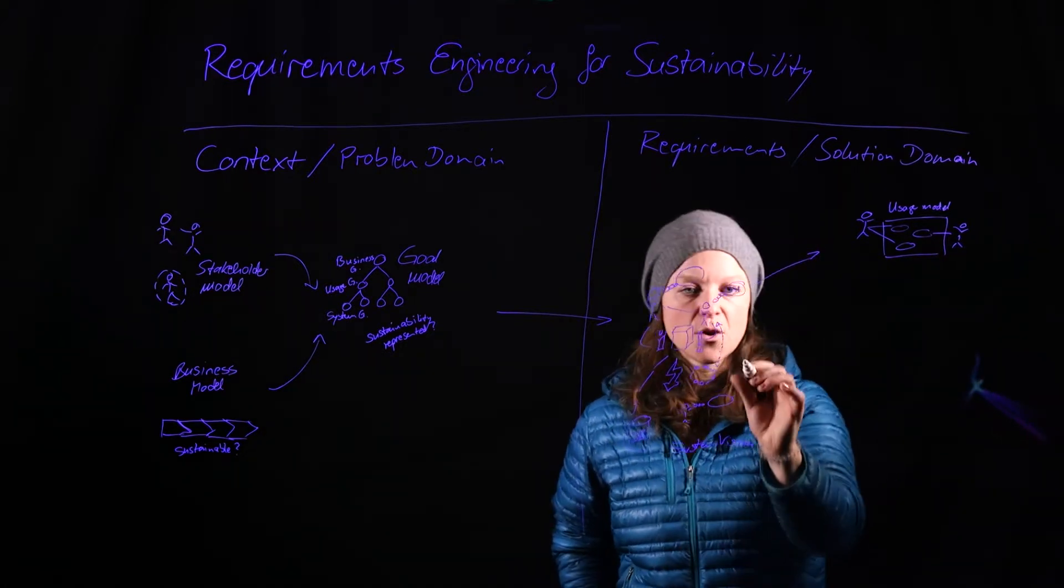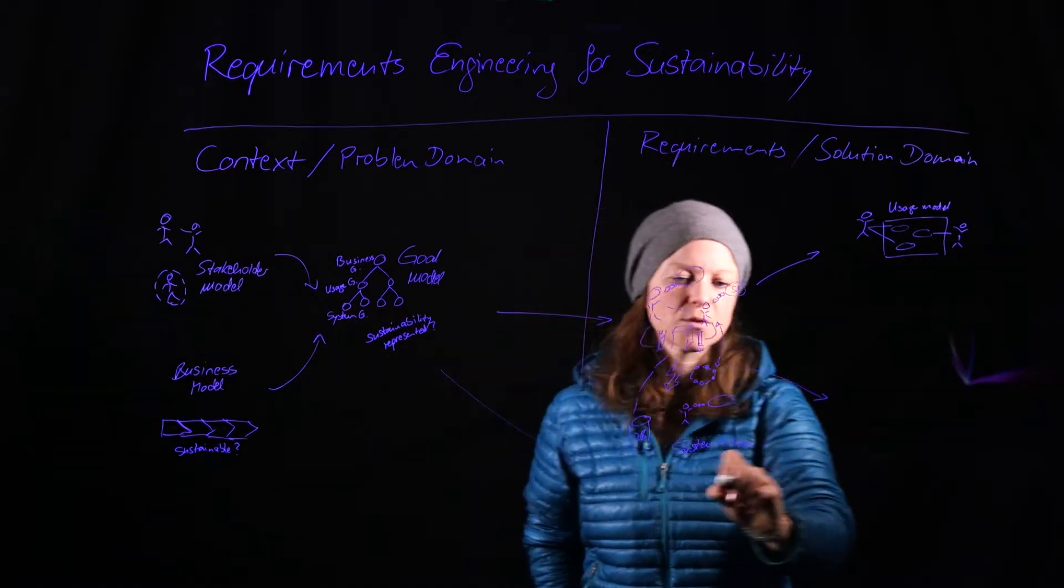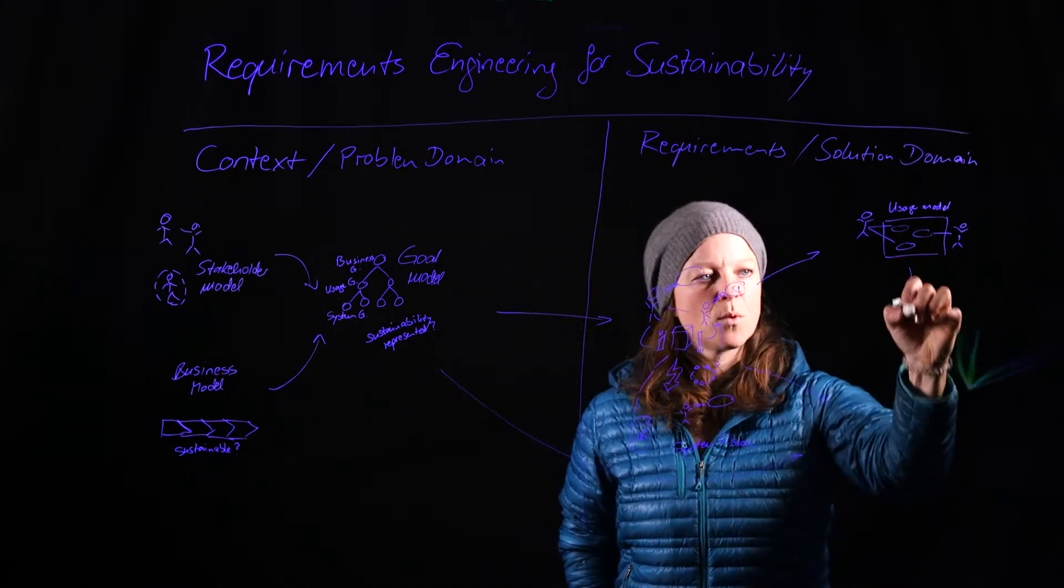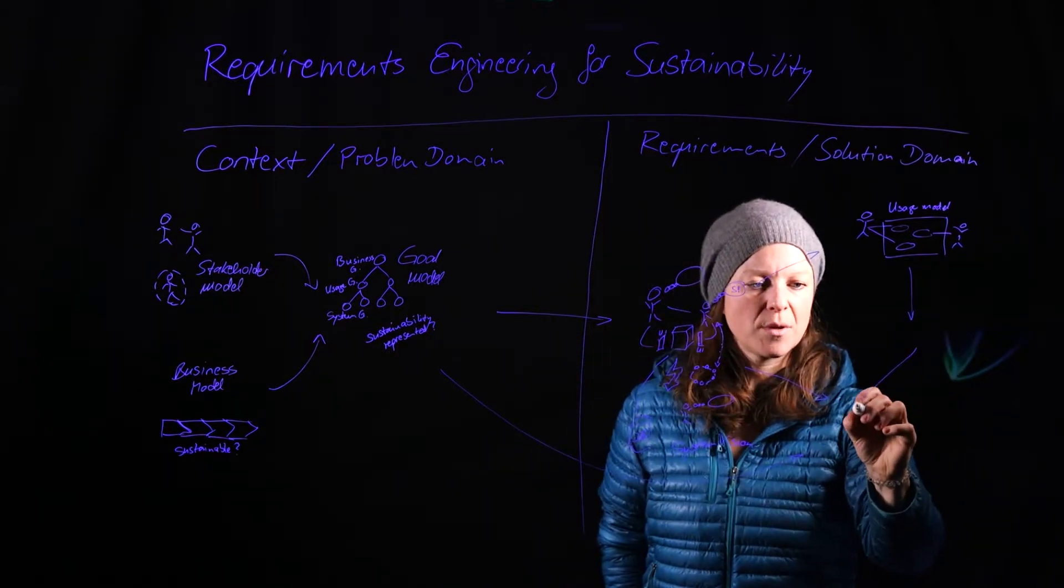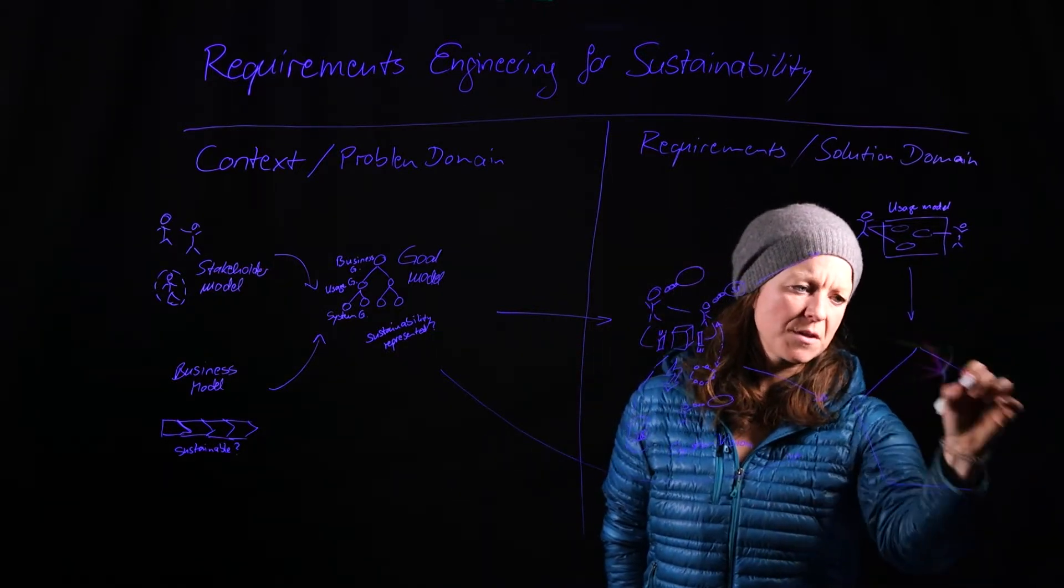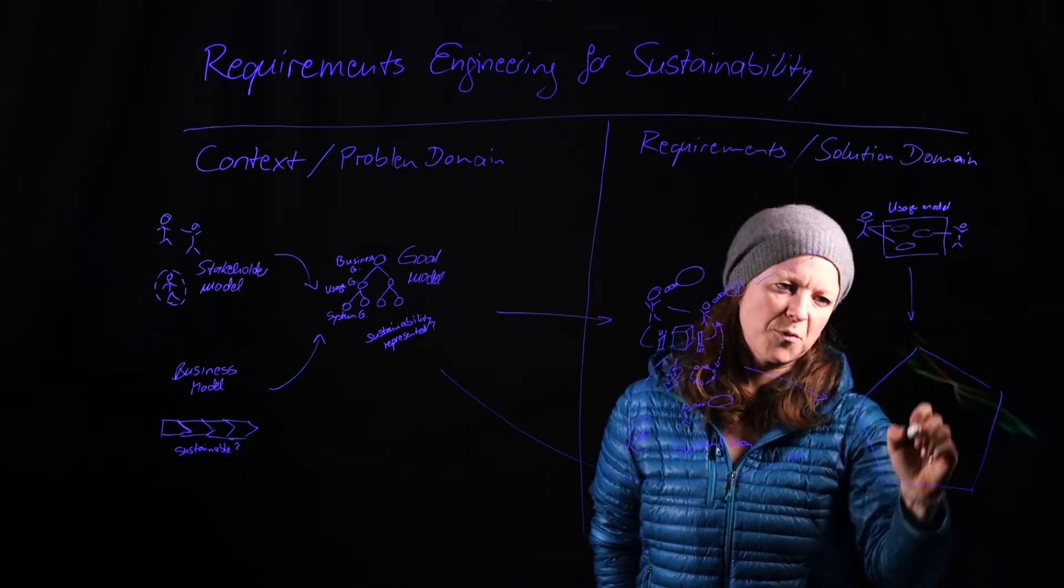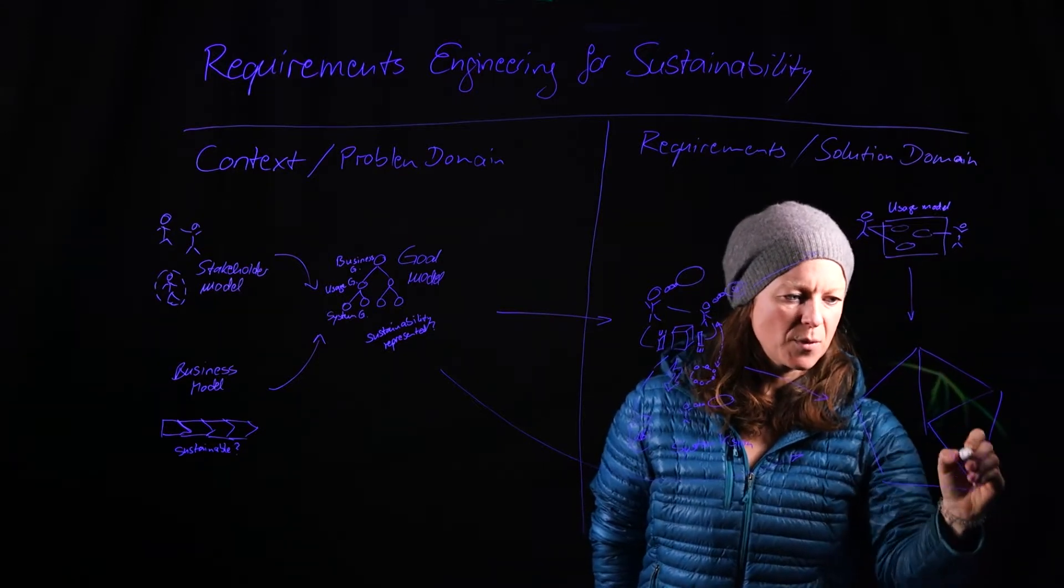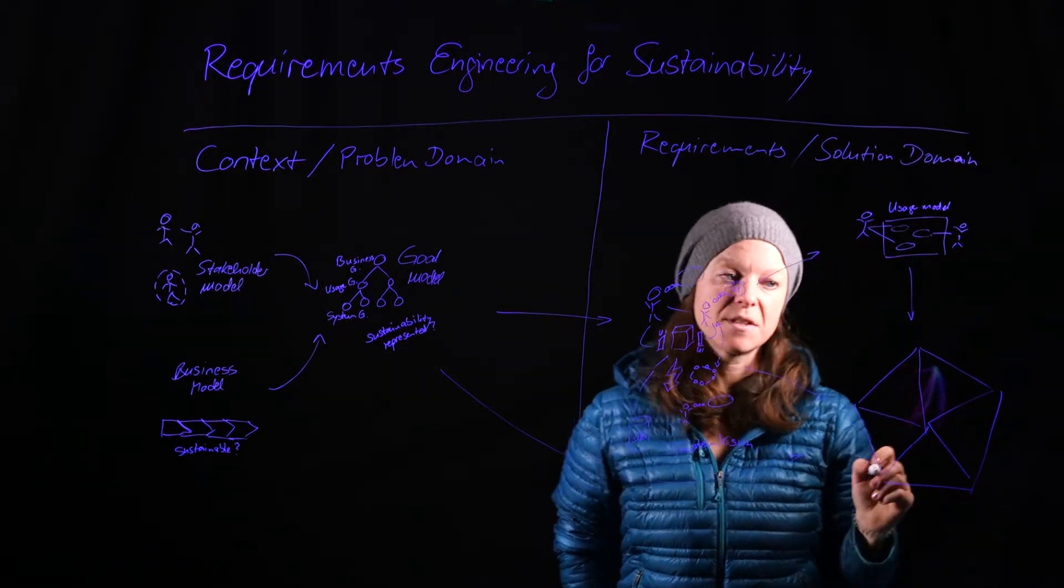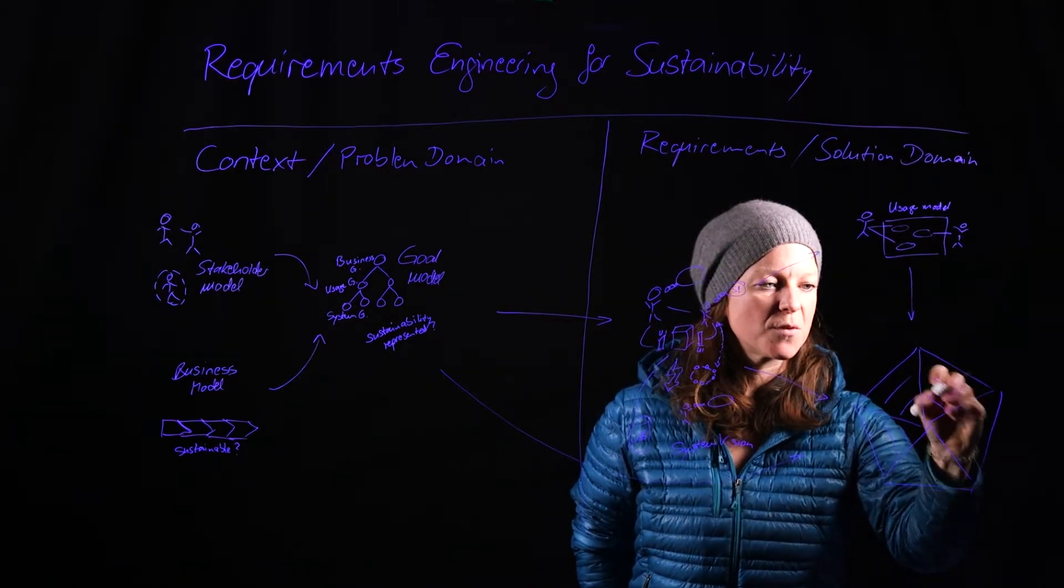And then, from that system vision, with influences from the goal model, with influences from the usage model, we're going to develop our sustainability analysis. Perfectly five-pointed star, right? Something like that.